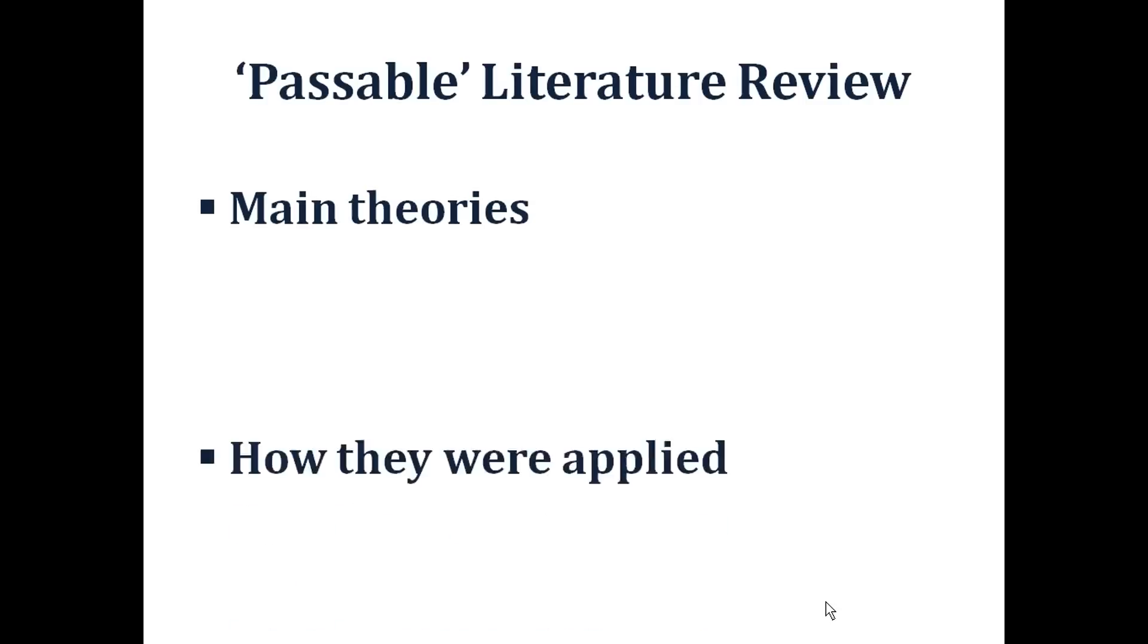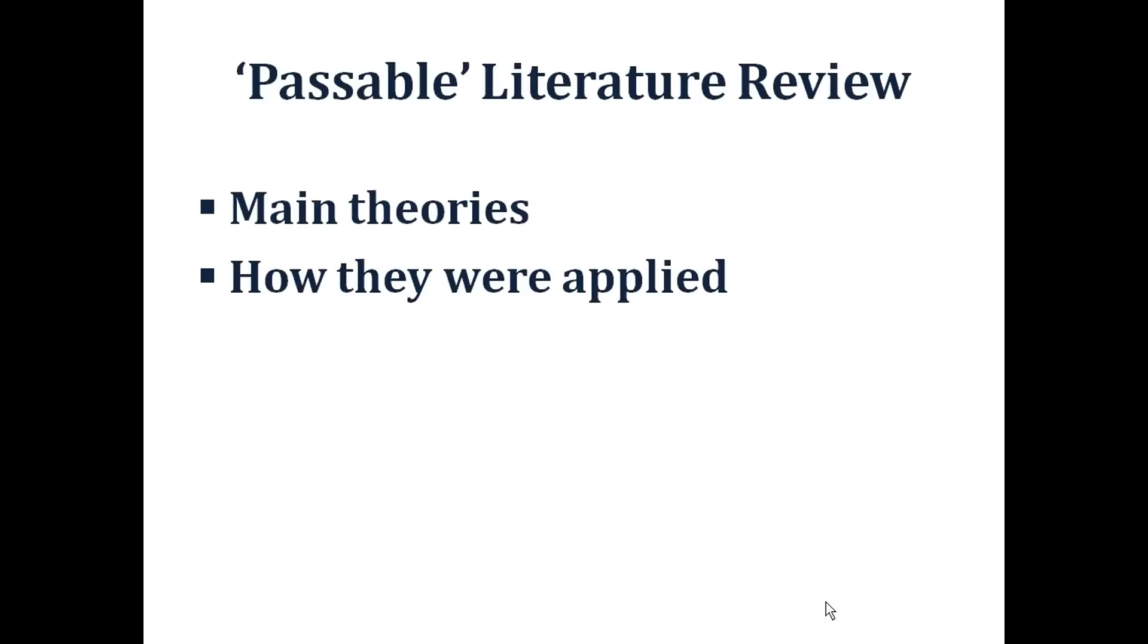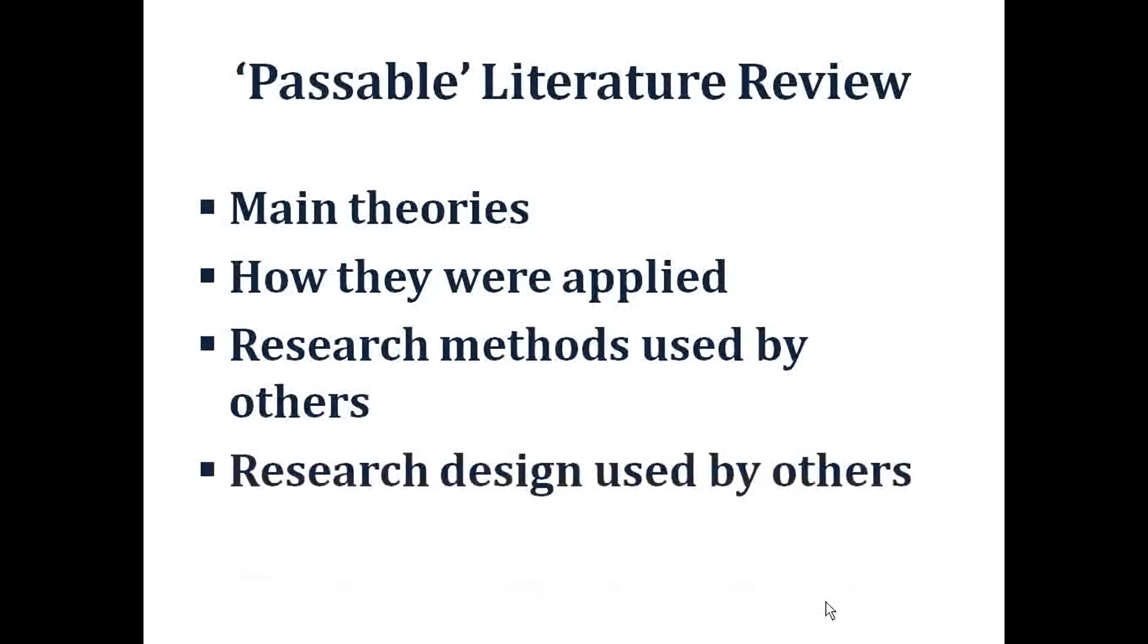A possible review consists of the following elements. Main theories, textbooks, how they were applied, journals. Research methods used by others and research design used by others. Comprehensive? Yes. But only possible. Why? Because it doesn't tell you or your reader how all of this is relevant to what you are writing.